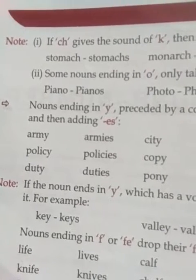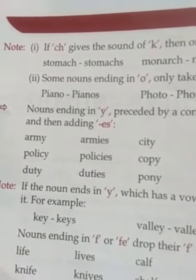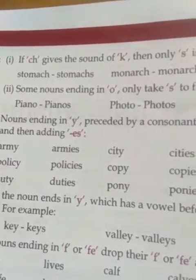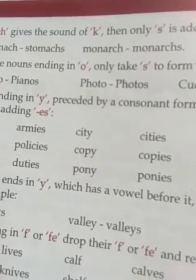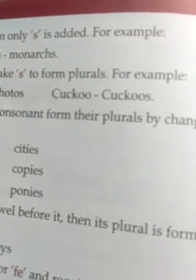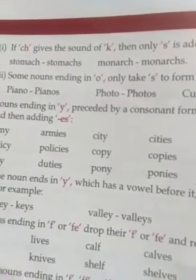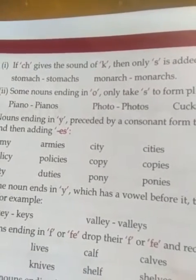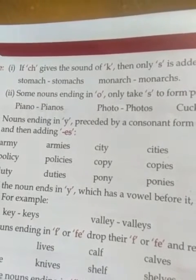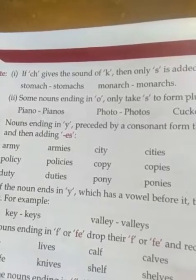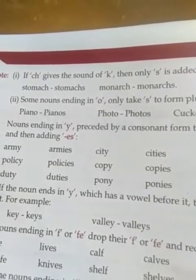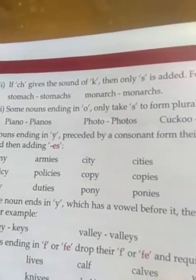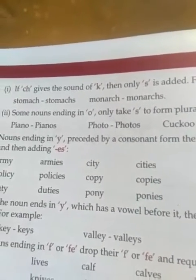Here is a note given in your book on page 38. If 'ch' gives the sound of 'k', then only 's' is added. For example: stomach → stomachs, monarch → monarchs. In my last video I told you that if there is 'ch' at the end of a word then 'es' is added. But if 'ch' gives the sound of 'k', then only 's' is added. Don't get confused.